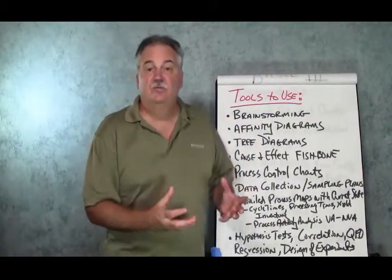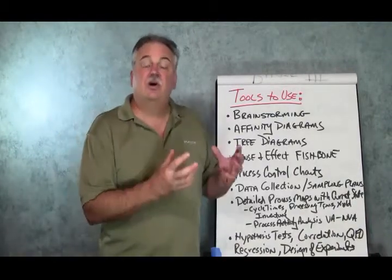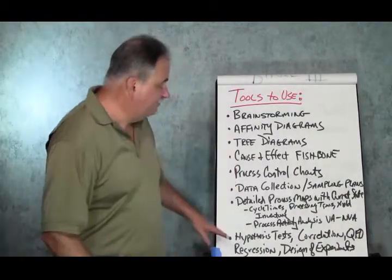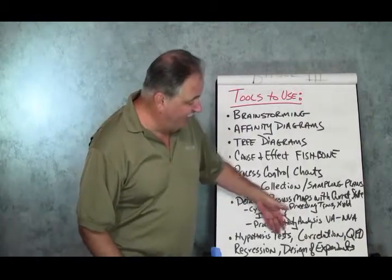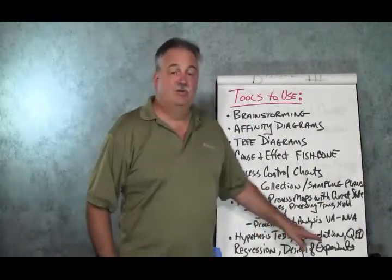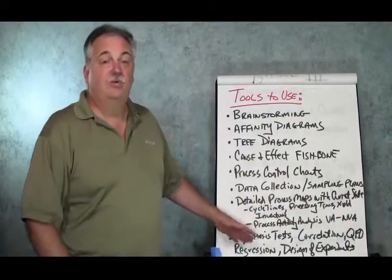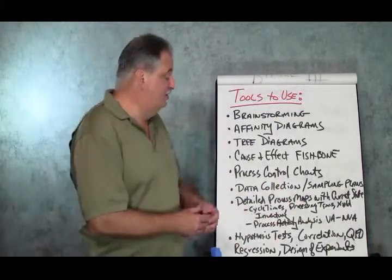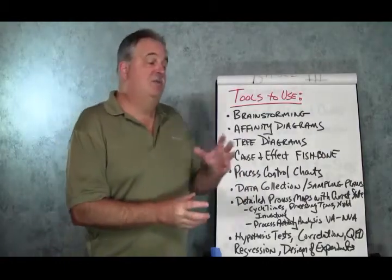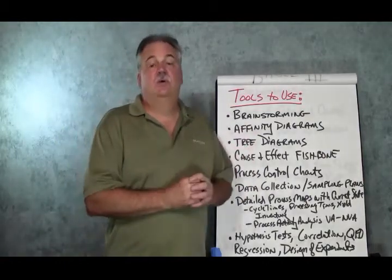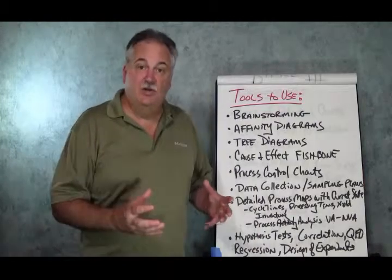All of these things on our detailed process map — including yield — help us understand our current state so we can identify what causes the current state to be where it is, and what we're trying to improve from. Then we can develop hypothesis tests. We can use correlation, quality function deployment, regression, and design of experiments. There are many tools and methods, and we pick and choose the ones that make the most sense based on the type of process we're dealing with.